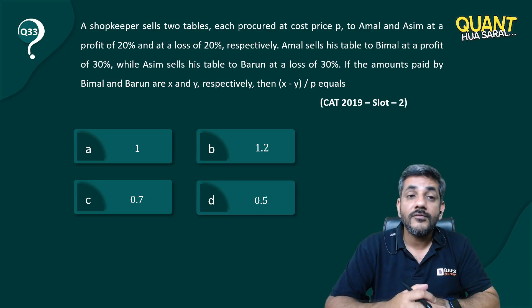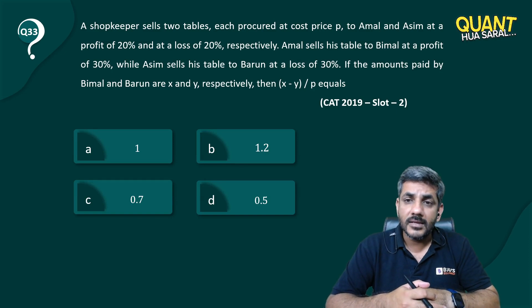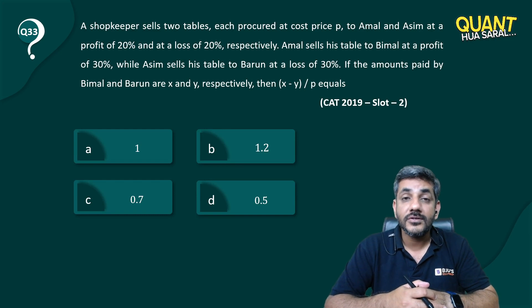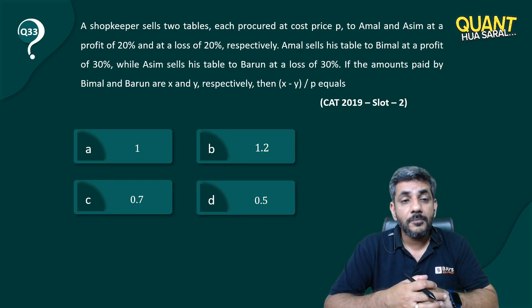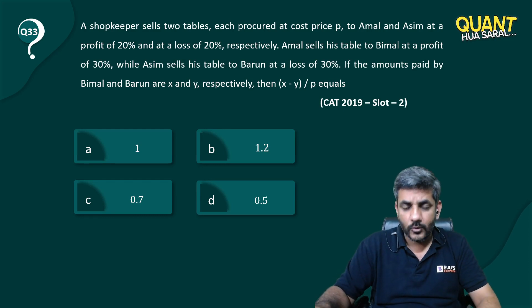Asim at a profit of 20% and at a loss of 20% respectively. Amal sells his table to Bimal at a profit of 30%, while Asim sells his table to Barun at a loss of 30%. If the amounts paid by Bimal and Barun are X and Y respectively, then (X - Y) / P equals what?